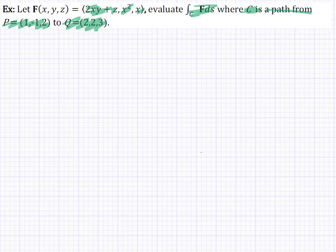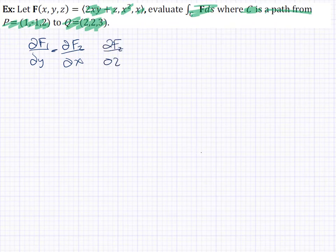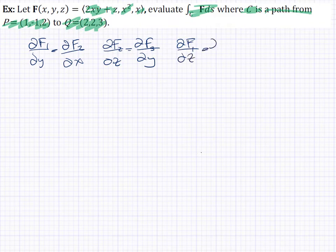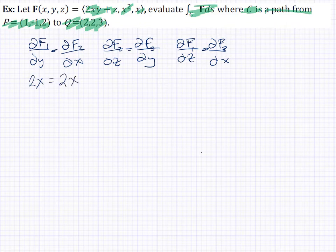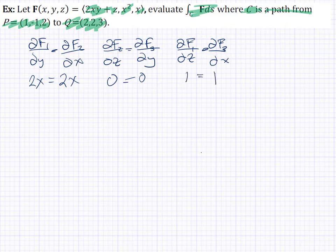To determine if the vector field is conservative, we check the cross-partials. The partial of F1 with respect to y must equal the partial of F2 with respect to x: both give 2x, so that works. The partial of F2 with respect to z equals the partial of F3 with respect to y: both are 0, so that works. The partial of F1 with respect to z equals the partial of F3 with respect to x: both give 1, so that holds. The vector field is conservative.